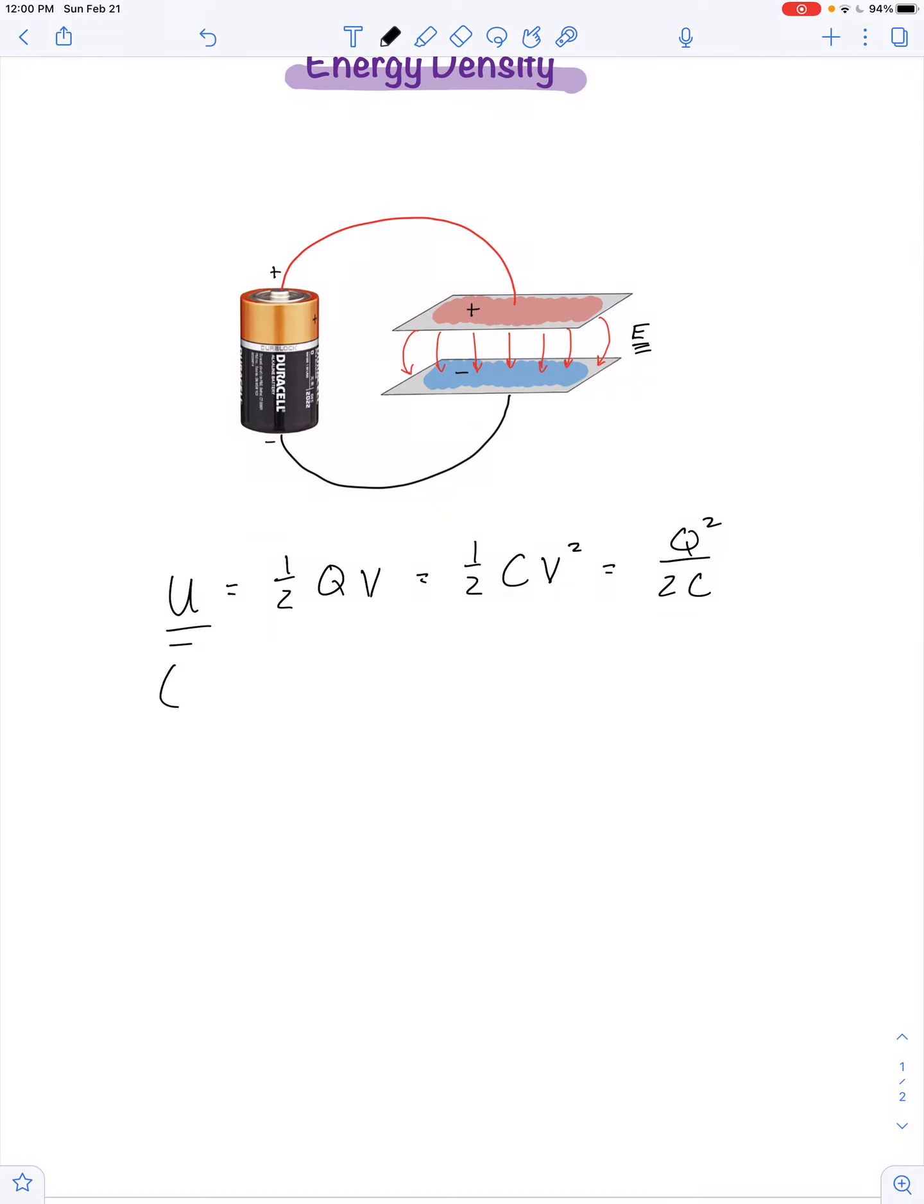Now U stands for the energy in units of joules. I want to define a new quantity called energy density, and we'll symbolize that with lowercase u. So that's measured in joules per cubic meter.